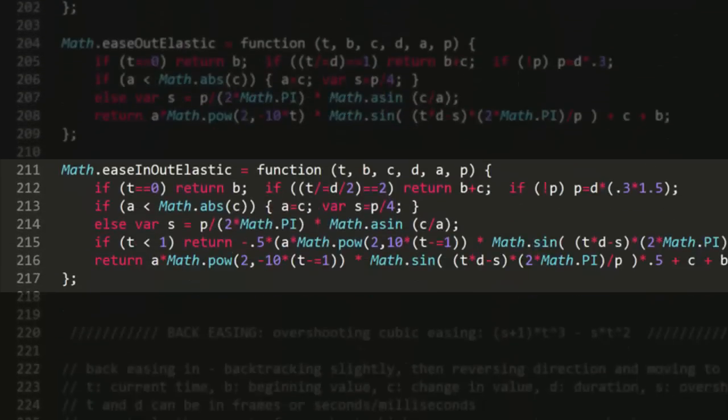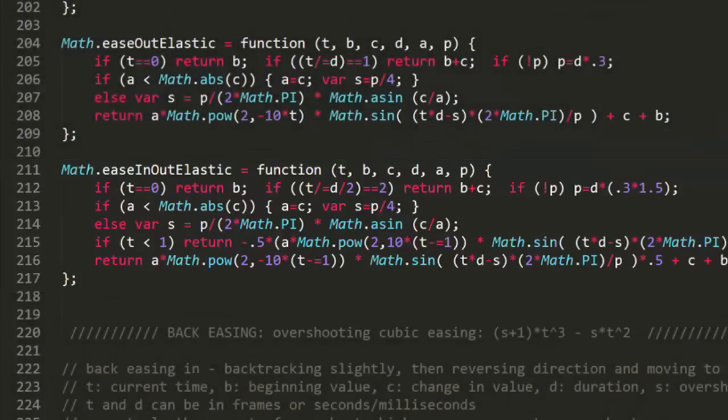Most of the other ease in and out formulas show this same basic strategy. Though some of them are a bit more complex. So there you go. Some insight on how a few of the easing formulas work. If you're making your own tweening library, you don't necessarily have to know how these work. You could just port them over to whatever language you're using. But I think it's good to have at least a basic understanding of what's going on in there.